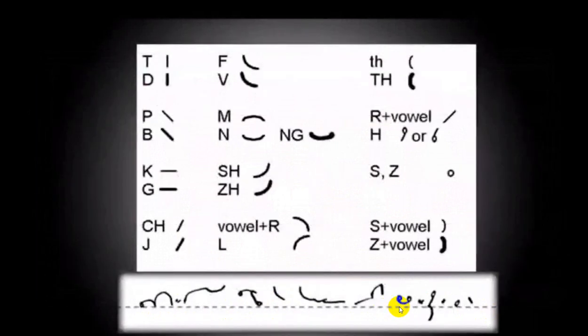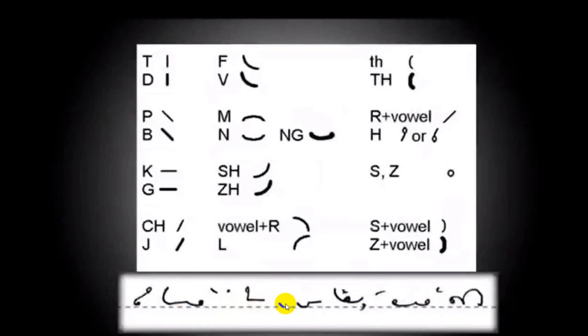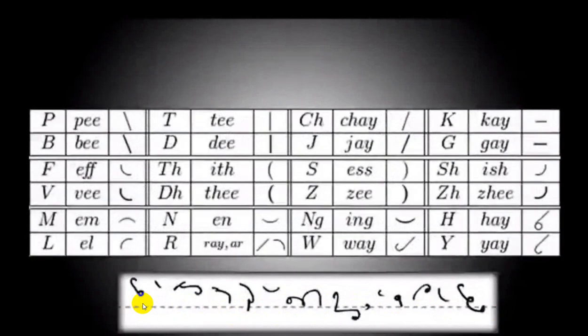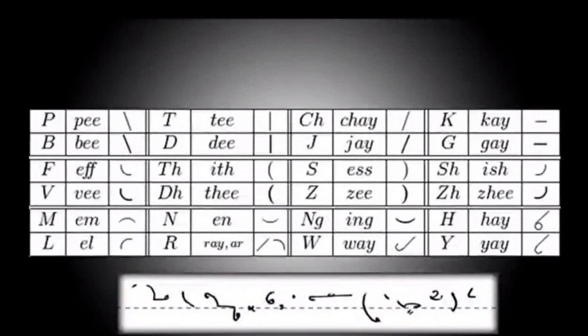Pitman used similar looking symbols for phonetically related sounds. He was the first to use thickness of a stroke to indicate voicing, and consonants with similar place of articulation were orientated in similar directions, with straight lines for plosives and arcs for fricatives.